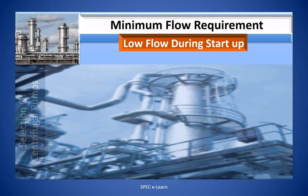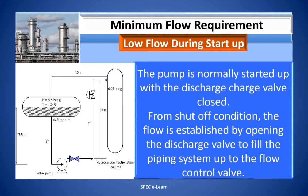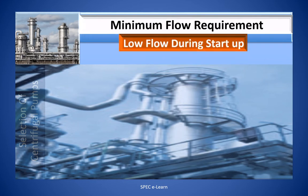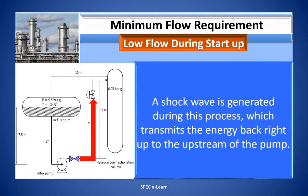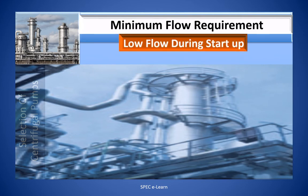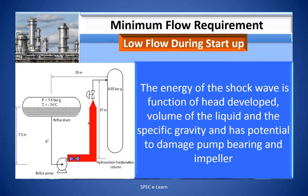The pump is normally started up with the discharge valve closed. From shut-off condition, flow is established by opening the discharge valve to fill the piping system up to the flow control valve. A shock wave is generated during this process which transmits energy back upstream to the pump. The energy of the shock wave is a function of head developed, volume of liquid, and specific gravity, and has the potential to damage pump bearings.